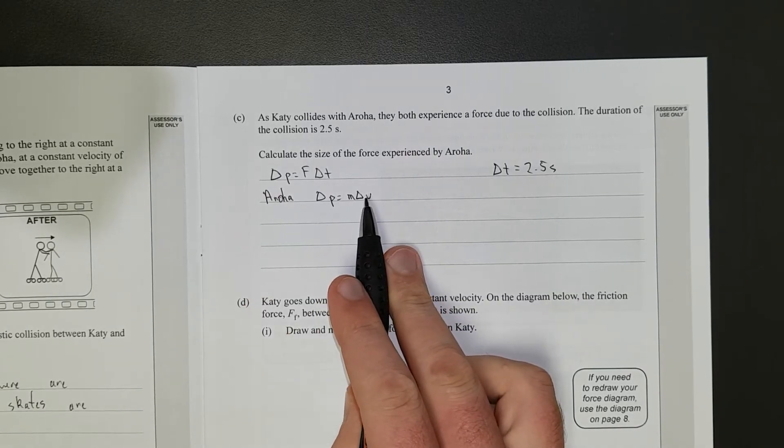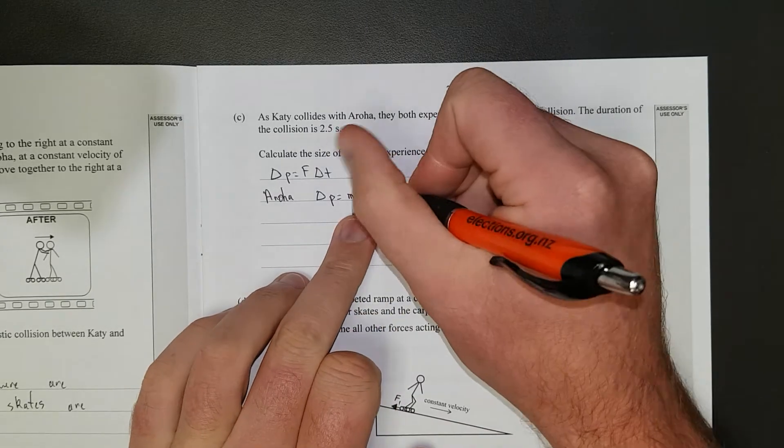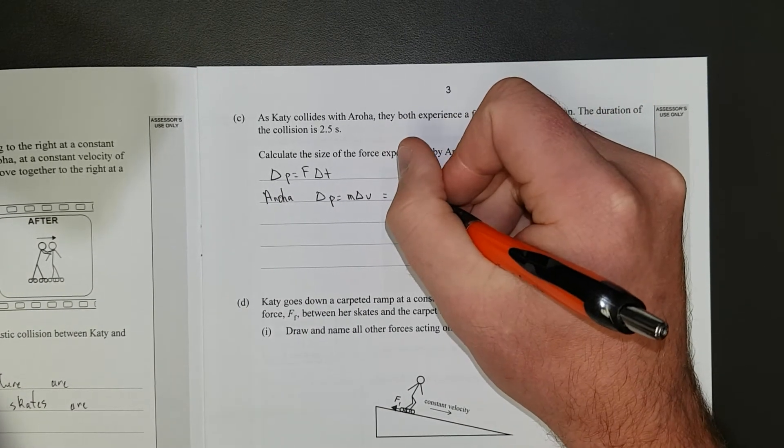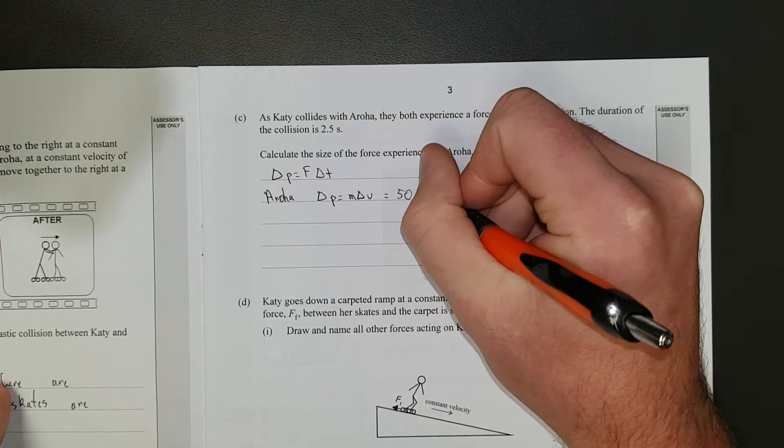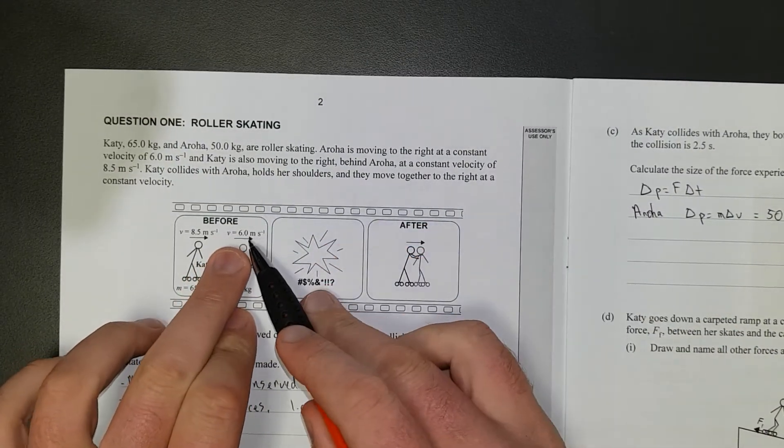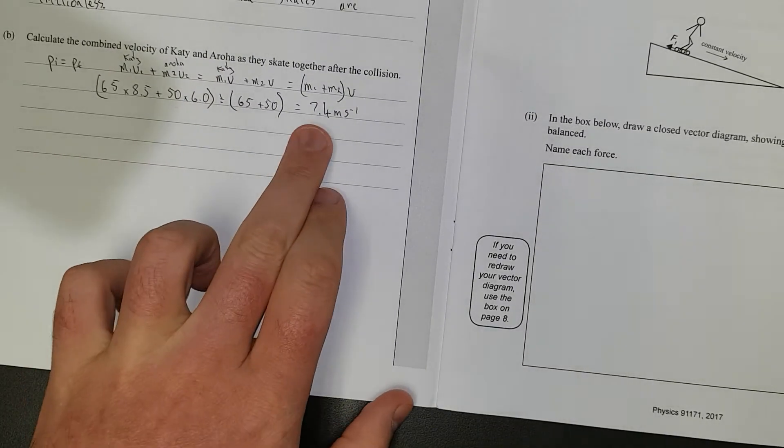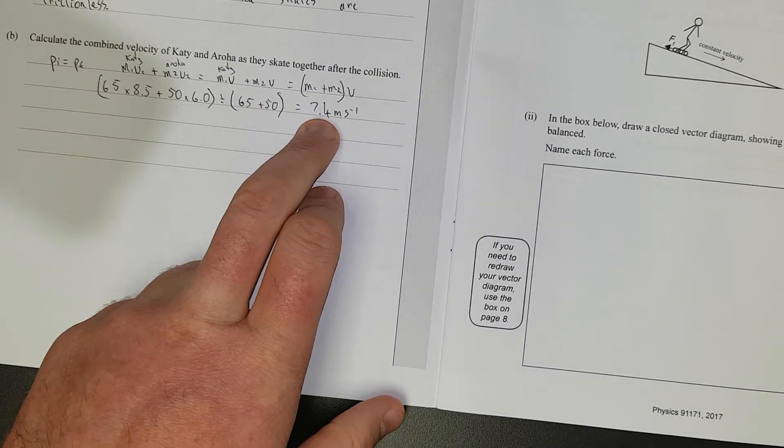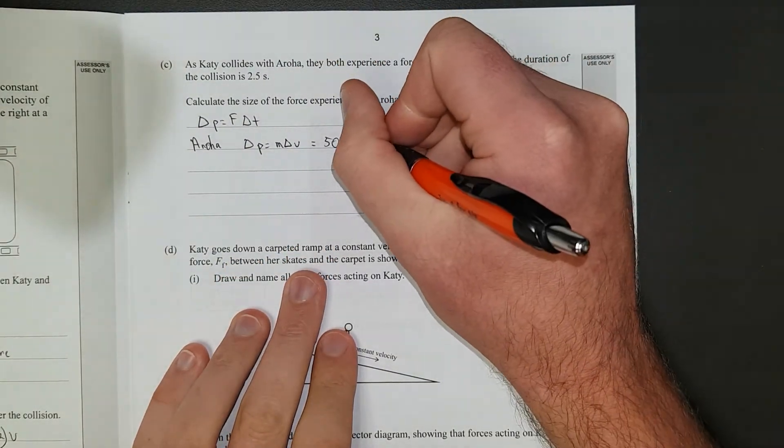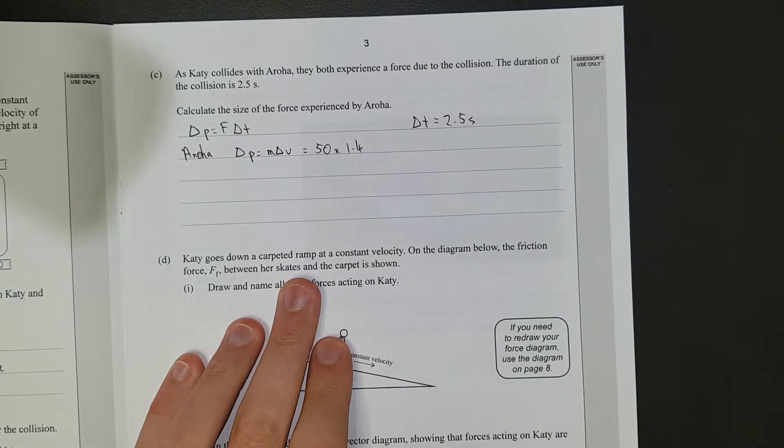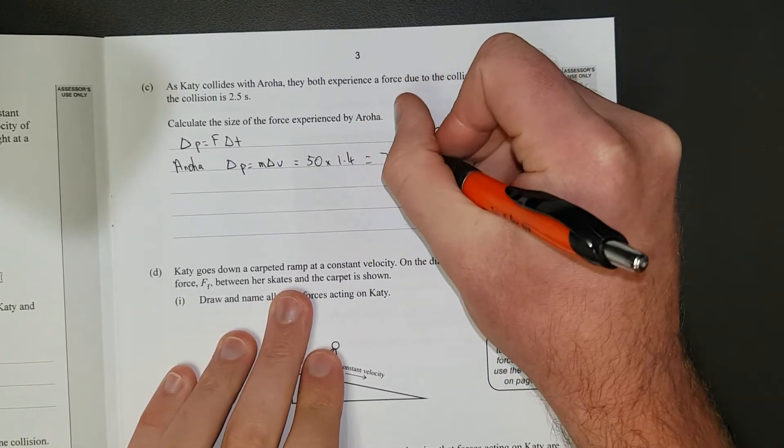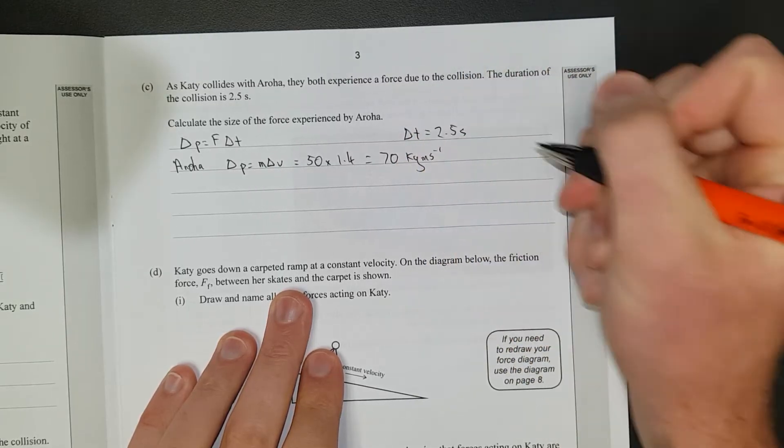So, it's pretty sneaky just to go, what's Aroha's mass? 50 kgs times, originally, she was going 6 meters per second. Now, she's going 7.4 because she's stuck together with Katie. So, the change, the difference between 6 and 7.4 is 1.4. Easy peasy, lemon squeezy, which gives us a change in momentum of 70 kg meters per second minus 1.